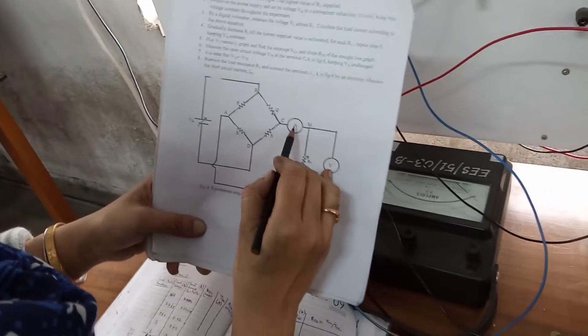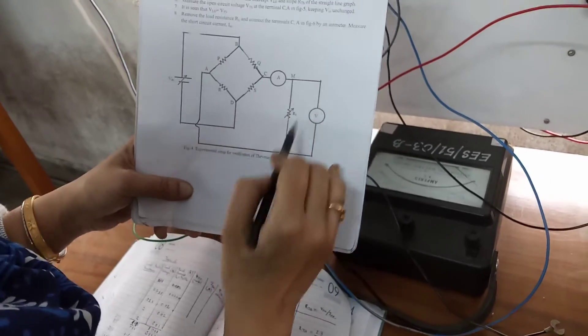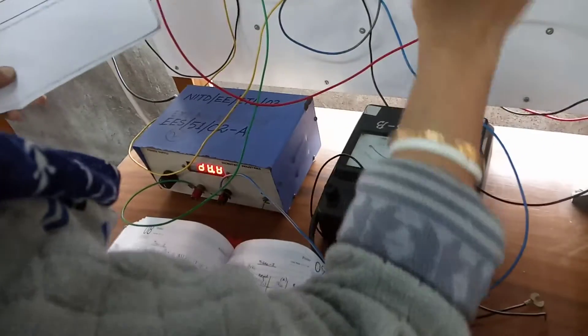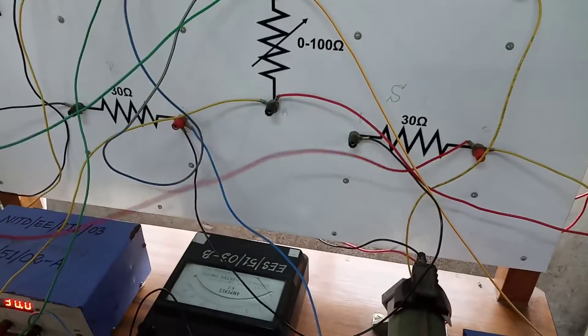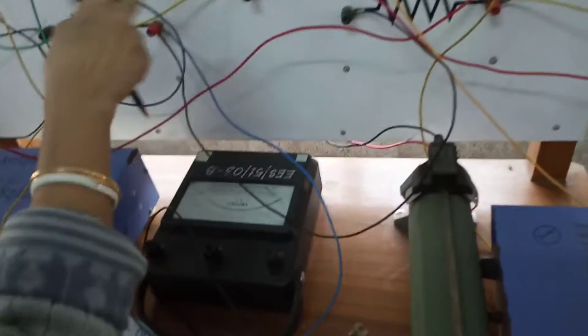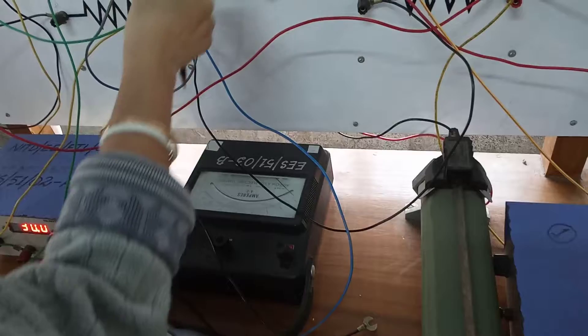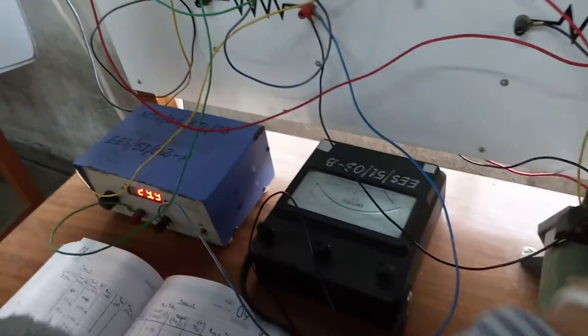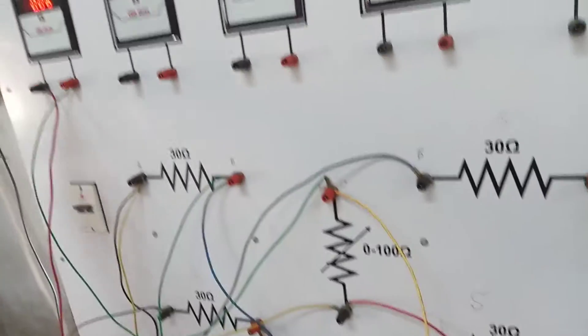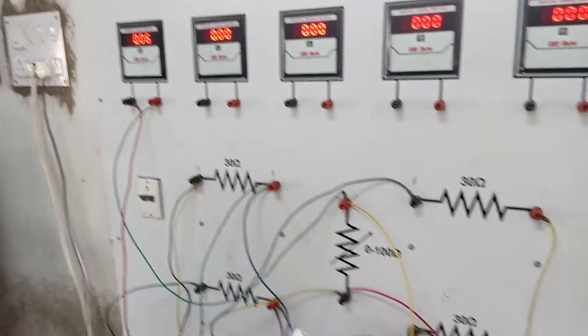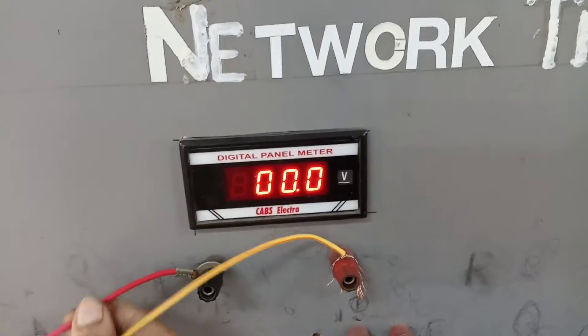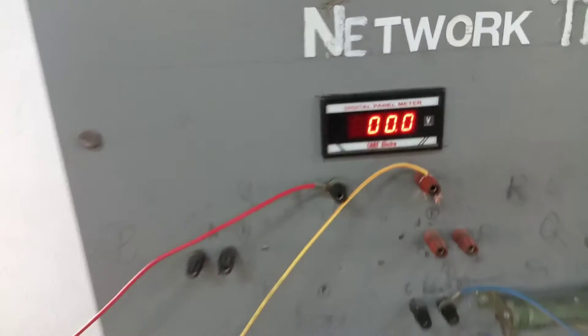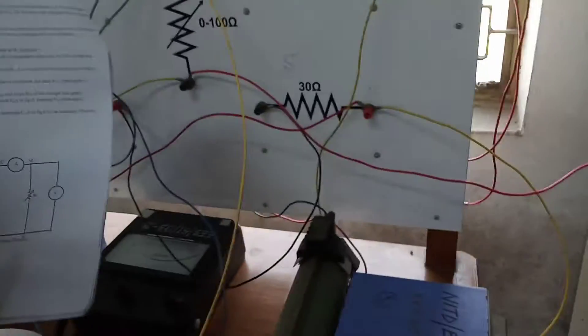Now ammeter is inserted here with RL. That means across C and A, one ammeter is connected. So this ammeter is here, connected across C and A. So across C and A, it is in series. You can see over here it is connected. So this is C, this is A point, through resistor. And across this load, one voltmeter is connected. So that voltmeter is coming here. It is connected across the load resistance. So this is all about the circuit connection.